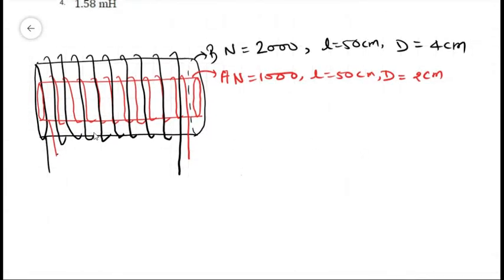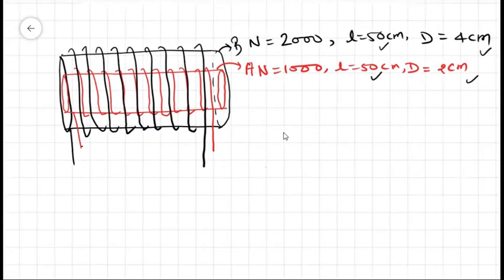I have already drawn this picture. The length of both solenoids is the same, 50 cm and 50 cm. The diameter of solenoid A is 2 cm and the diameter of solenoid B is 4 cm. The number of turns are 1000 and 2000 respectively.